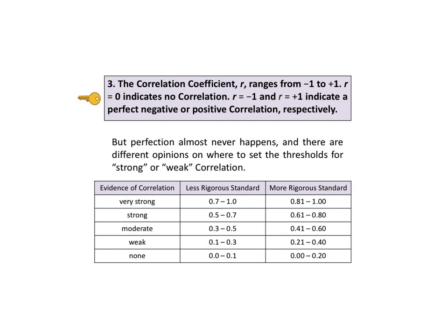But perfection almost never happens, and there are different opinions on where to set the thresholds for strong or weak correlation. In the social sciences, the phenomena being analyzed are not as precisely governed by the laws of science as are engineering and scientific phenomena or processes. So the clip levels in the social sciences tend to be less rigorous.